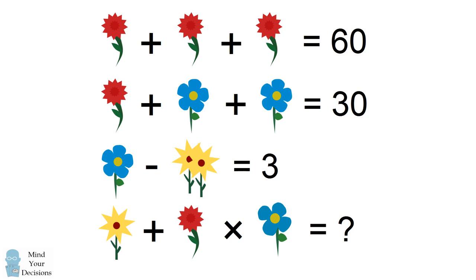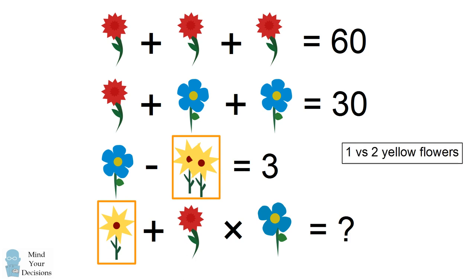To get started, you want to look very closely at the pictures. In the very last equation, the first picture shows one yellow flower. This is not the same as the equation before, which has two yellow flowers.